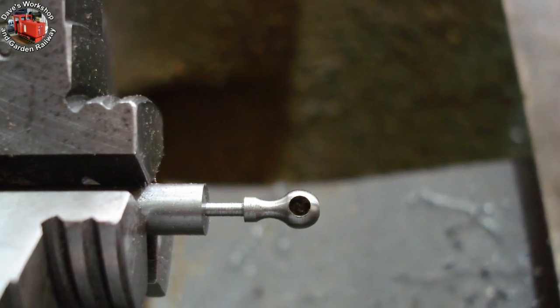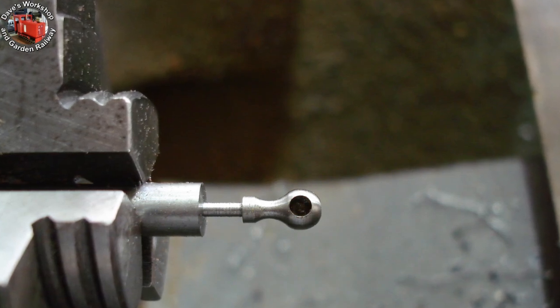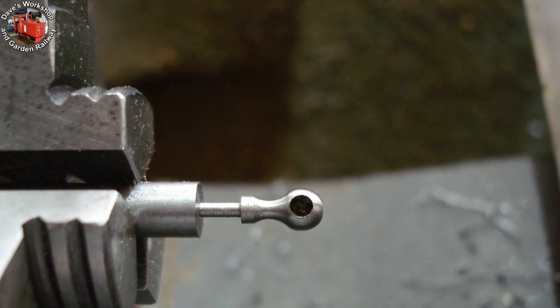Then back on the lathe for turning a 5/32nds length for 10BA threading, using the parting tool to get into that space. The body is 0.350 inches long.